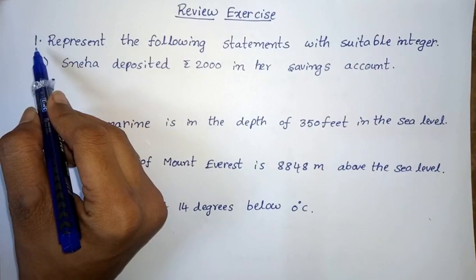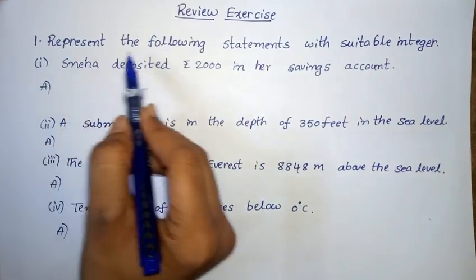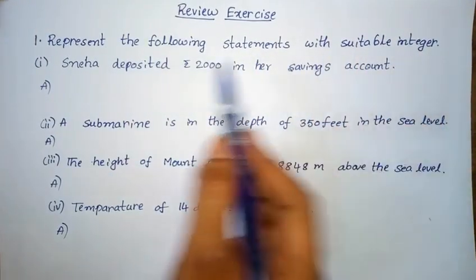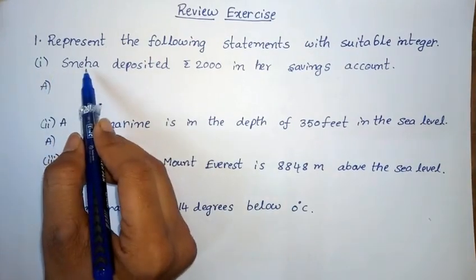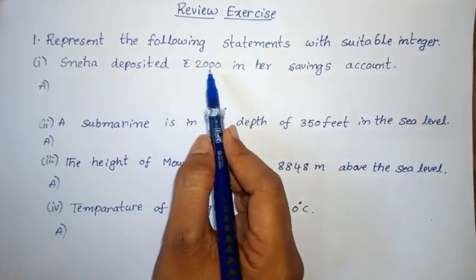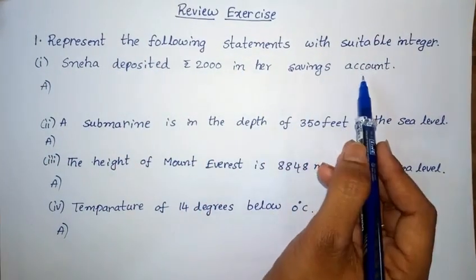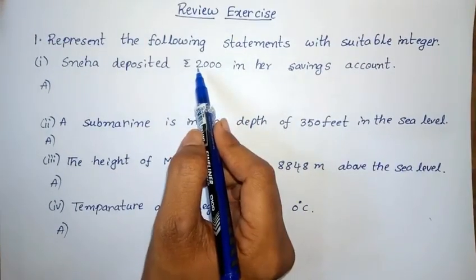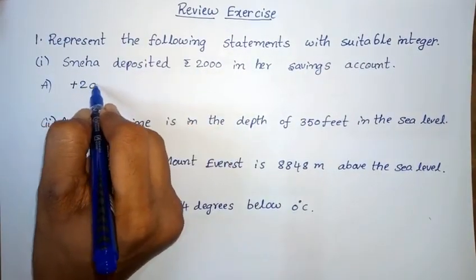1st Roman: Represent the following statements with suitable integers. 1st one: Schneeha deposited 2000 rupees in her savings account. So the integer is plus 2000 rupees.